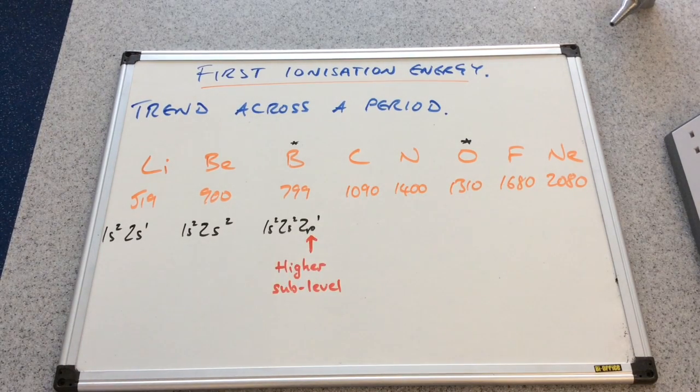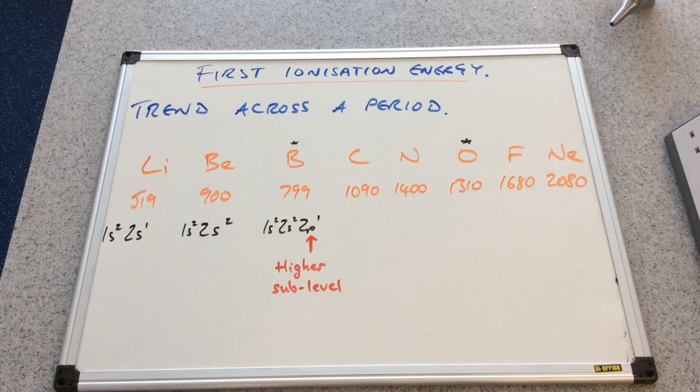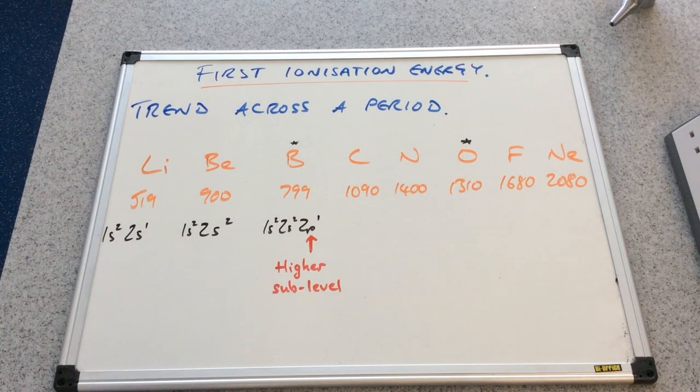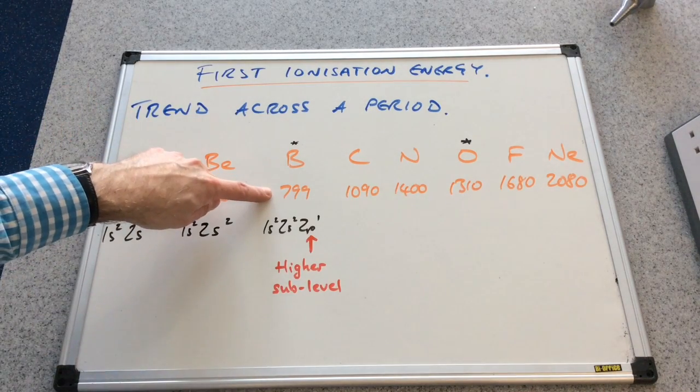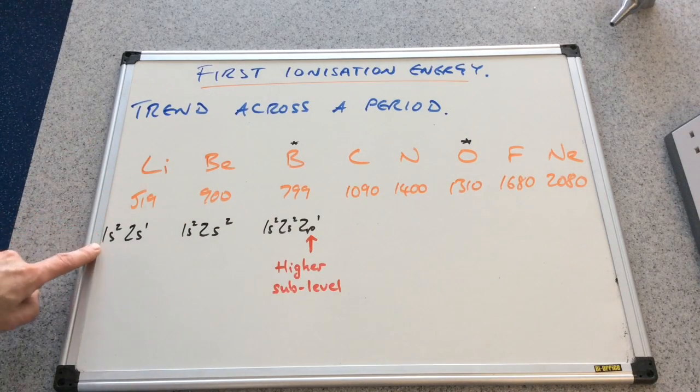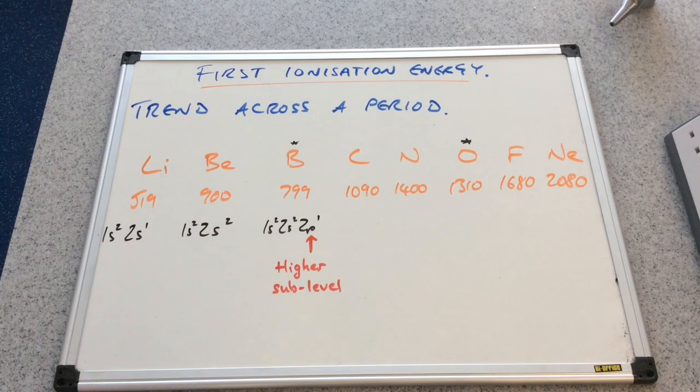We'll deal with those two anomalies now. We'll start with boron. We've got a gradual increase due to the factors we've just discussed. And then it dips a little bit for boron. You can see I've added some extra detail here. That's the electronic configurations for these three atoms.